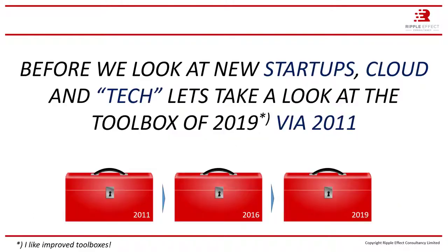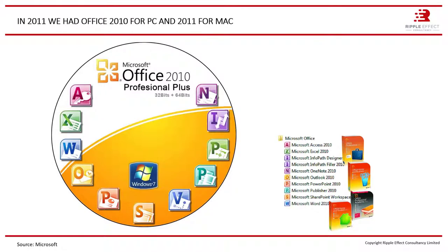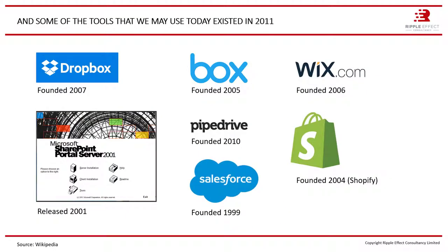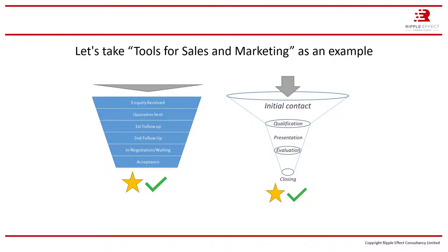Things have happened since 2016 — more startups, more cloud, and more tech. Because we are in 2019, not 2016, before we go on and look at new startups, cloud, and tech in future videos, let's take a look at the toolbox of 2019. Going back to 2011, with Office 2010 for PC and 2011 for Mac, we are still using the same tools now in new versions. Some tools we use today existed prior to 2011: Dropbox founded in 2007, Microsoft SharePoint first versions around 2001, Box in 2005, Salesforce, and so on. Let's take tools for sales and marketing as an example going forward in this video, because sales is the key for any company.